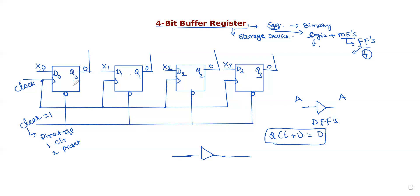Here we have four flip-flops with inputs, outputs, connections for clear and clock. We store external binary data into this register. The combinations range from 0,0,0,0 to 1,1,1,1.